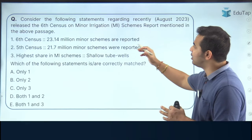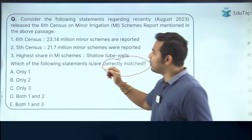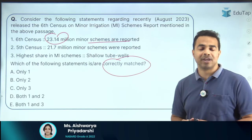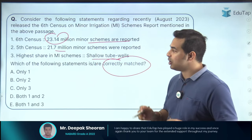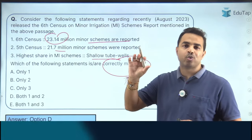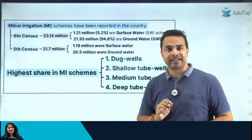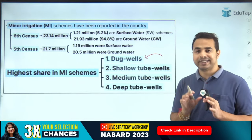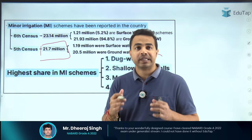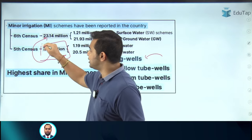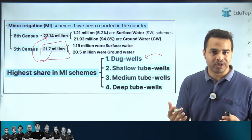The next question asks you to identify correctly matched statements from the 6th Minor Irrigation Census. Statement 1: 23.14 million minor schemes reported — correct. Statement 2: in the 5th census, there were 21.7 million schemes — correct. Statement 3: highest share was of shallow tube wells — incorrect, it was dug wells on top, followed by shallow tube wells, medium tube wells, and deep tube wells. Both statements 1 and 2 are correctly matched.